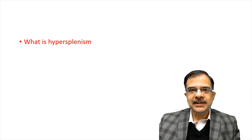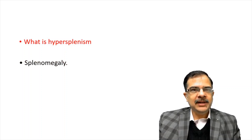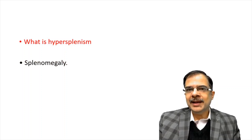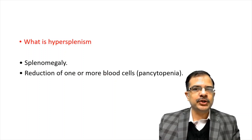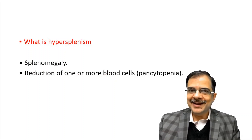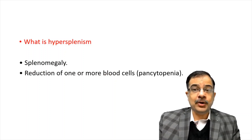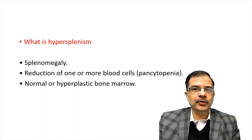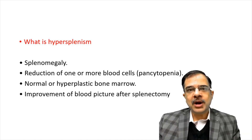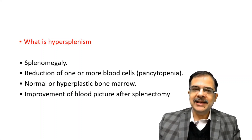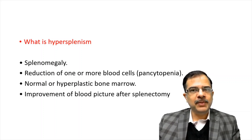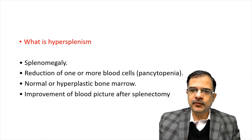An important question: what is hypersplenism? Hypersplenism means splenomegaly is present and the functions of the spleen are increased in terms of reduction of one or more blood cells — it can be bicytopenia or pancytopenia. Normal or hyperplastic bone marrow will be seen, no bone marrow failure is present, and there is improvement in blood picture after spleen removal.